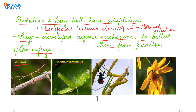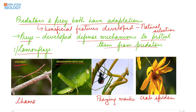Similarly, the praying mantis appears like a twig. The crab spider resembles the petals of a flower — here a yellow-colored flower — and the crab spider is completely indistinguishable from the petals. The chameleon is able to change its color according to its surroundings so that it does not get detected by the predator.